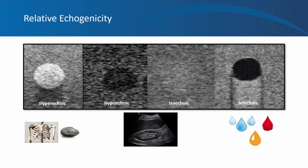Examples of bright structures you'll encounter during abdominal ultrasound include stones, bones such as ribs, fibrous structures like the diaphragm, and renal sinus fat. Note that stones and bones don't let any sound waves pass through them, so they form a shadow beneath them. Fibrous structures such as the diaphragm or renal capsule still allow some sound waves to pass through, so there will be no shadow, but these structures still appear bright.